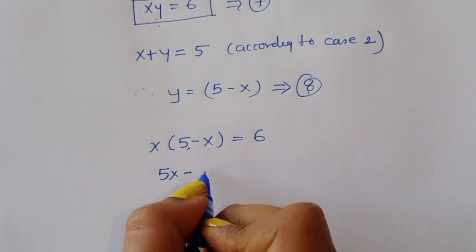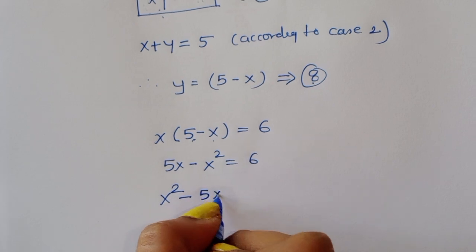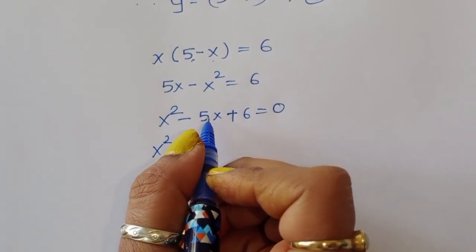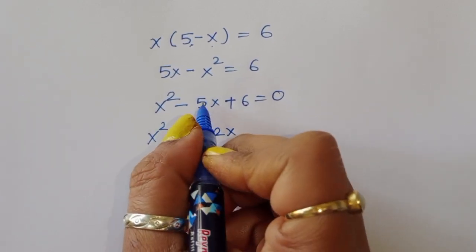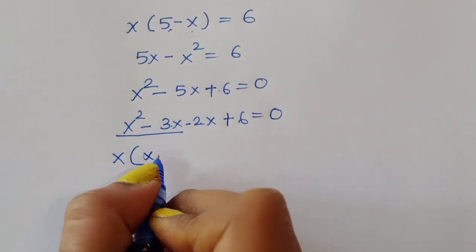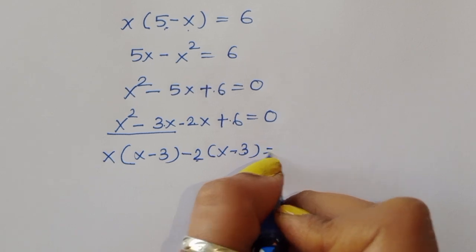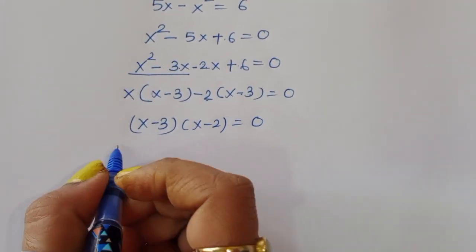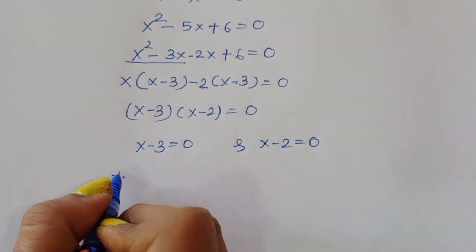Rearranging: x² − 5x + 6 = 0. Factoring: x² − 3x − 2x + 6 = 0, so x(x − 3) − 2(x − 3) = 0, giving (x − 3)(x − 2) = 0. Therefore x = 3 or x = 2.